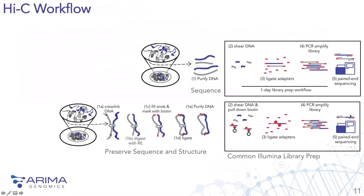The molecules that get sequenced are chimeric — a mixture of gray and blue — whereas in an NGS prep it's all blue or all gray. In conventional NGS, these are short contiguous sequences, while in Hi-C, these are chimeric sequences where the insert length is variable, depending on which sequences were close in three-dimensional space.